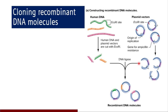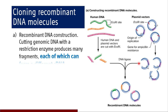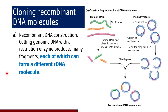Coming to the cloning of the recombinant DNA molecule step: cutting genomic DNA with a restriction enzyme produces many fragments, and it will yield a mixture of restriction fragments from the human genomic DNA, each of which can form a different recombinant DNA molecule. Since the sticky ends are the same regardless of the sequence of the restriction fragment from human genomic DNA, there will be a variety of different recombinant DNA molecules formed due to addition of different restriction fragments, enabled by the action of DNA ligase.